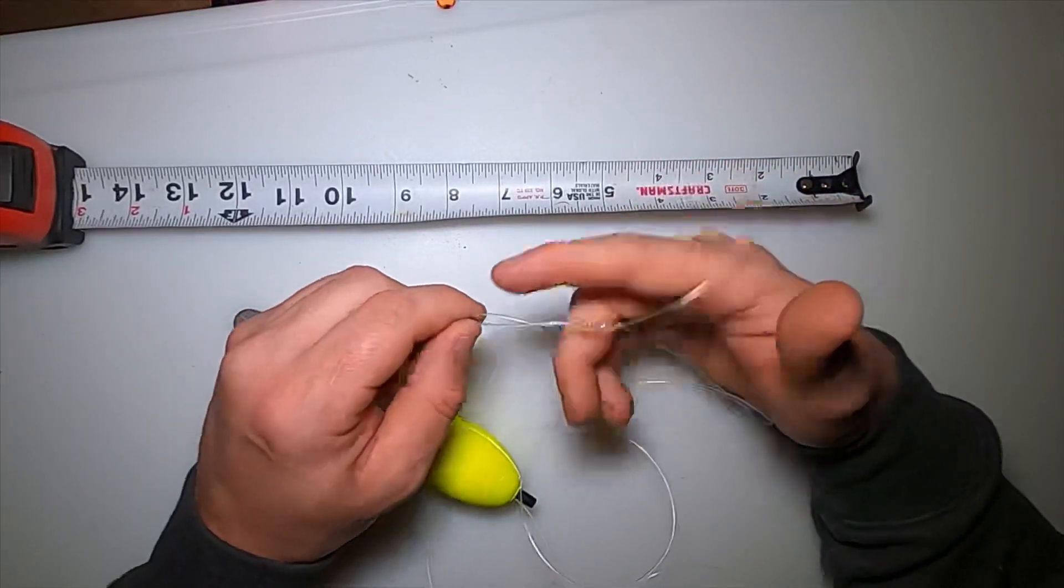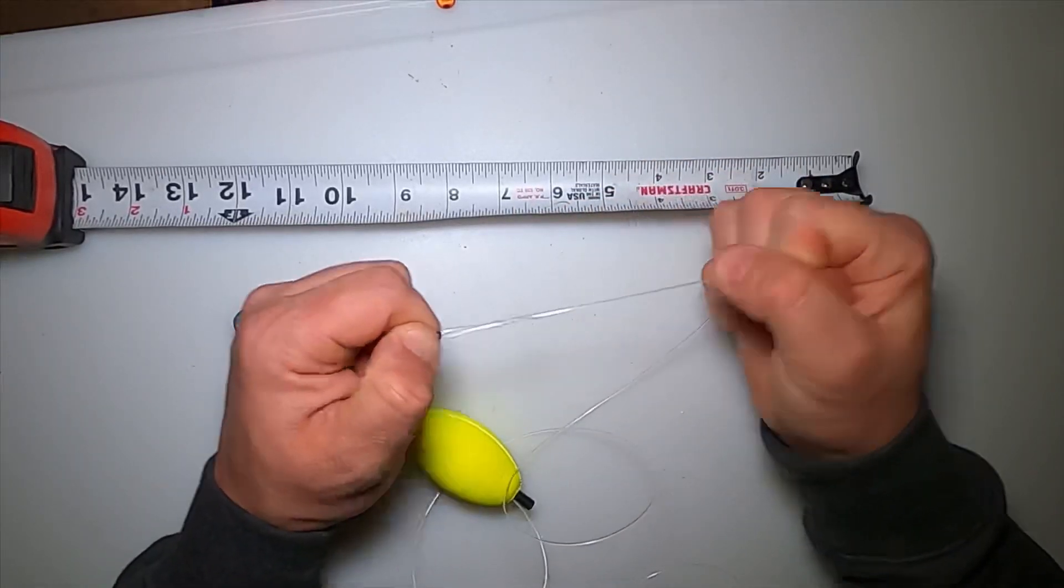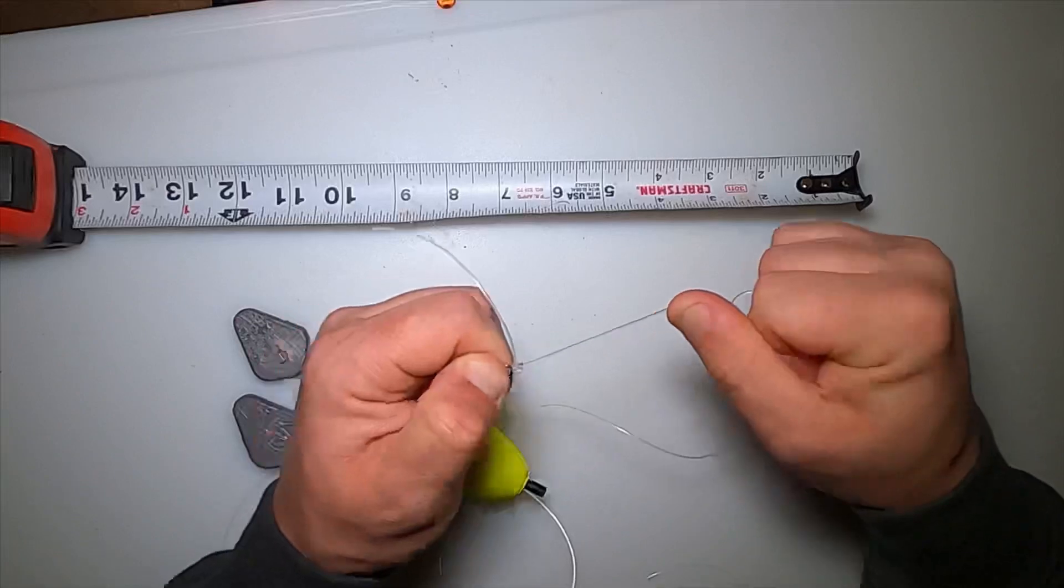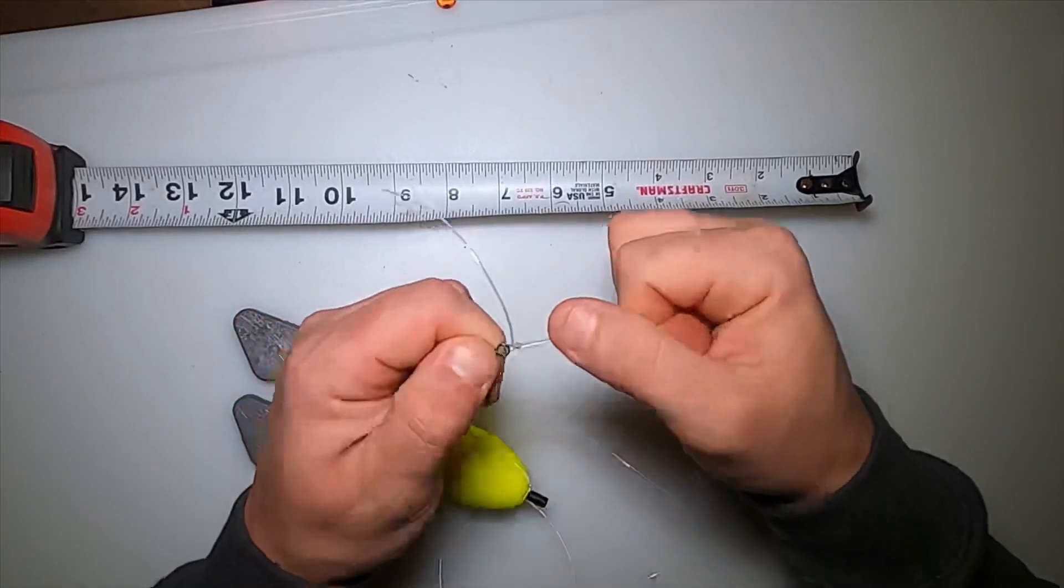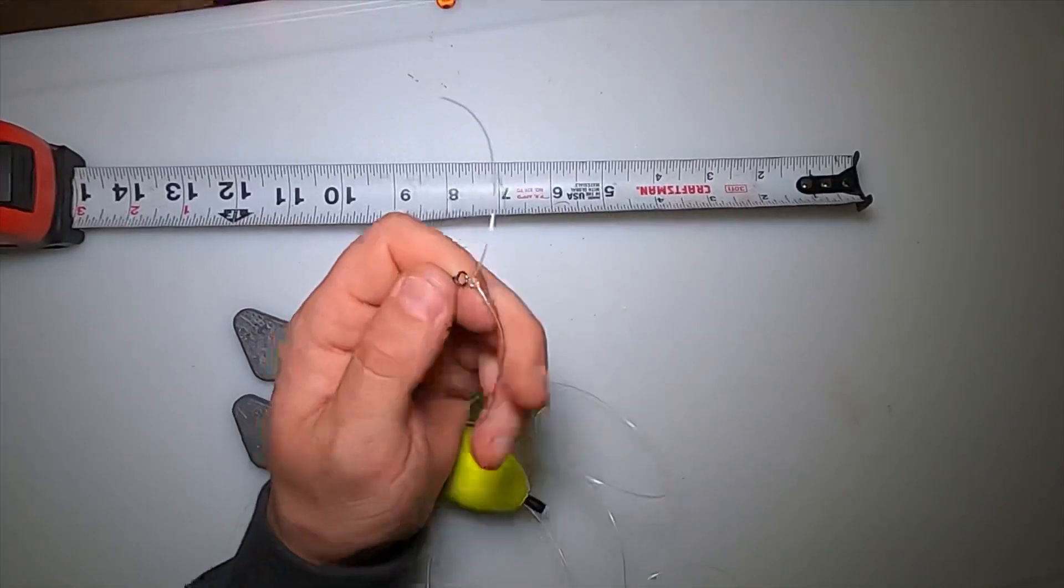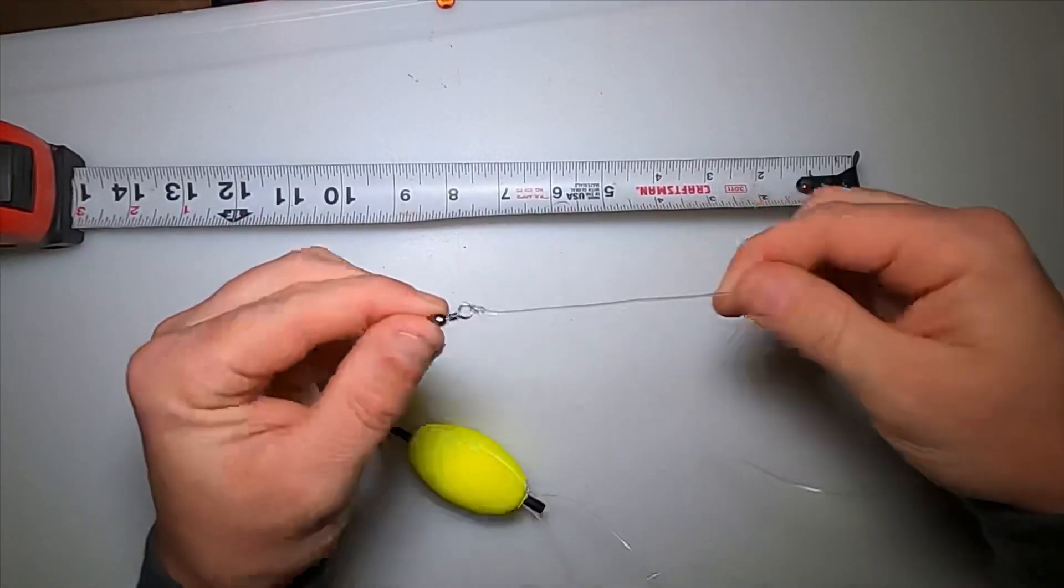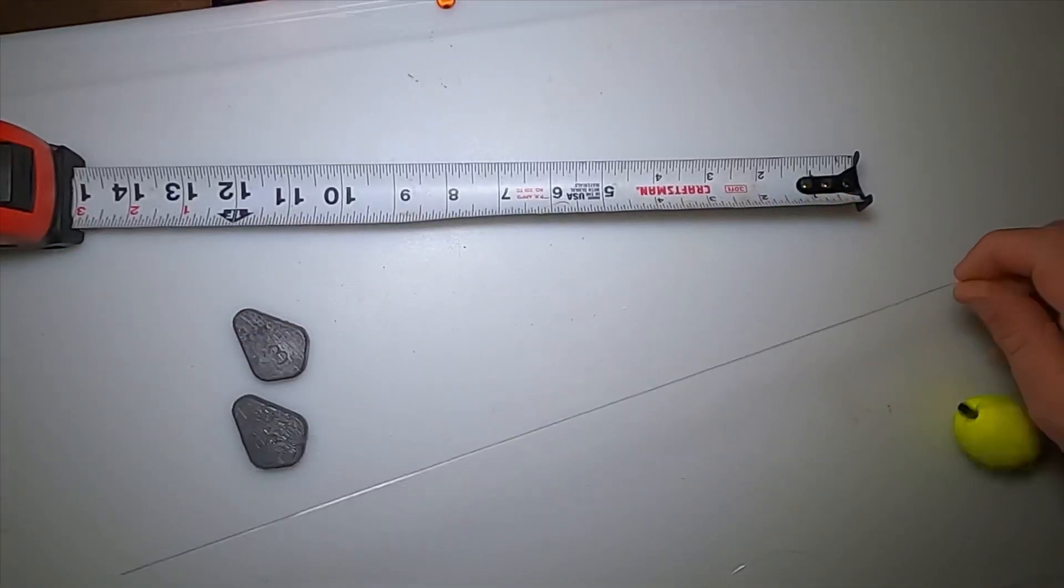I usually wet the line with my mouth right there so friction doesn't weaken the line. You can see when you pull on it, it clenches up and tightens up. Here's your fisherman's knot - leave a quarter of an inch. And there's your leader.